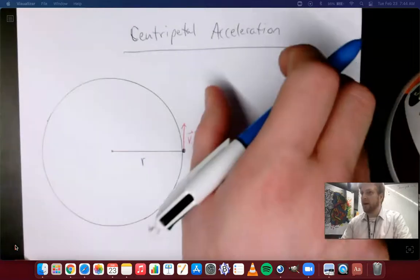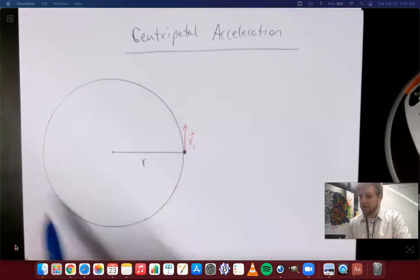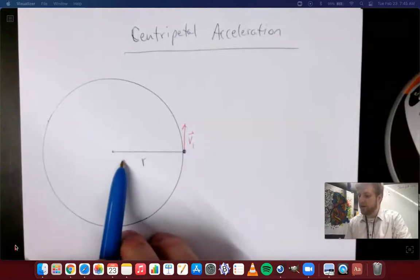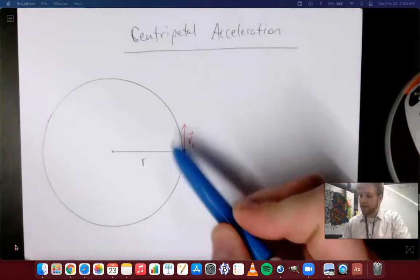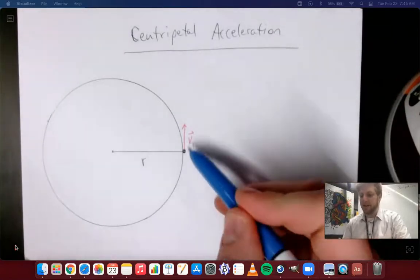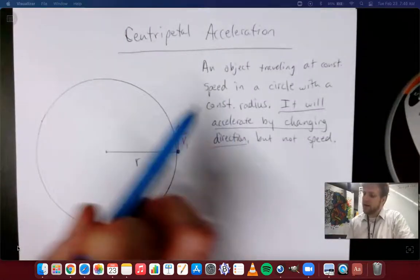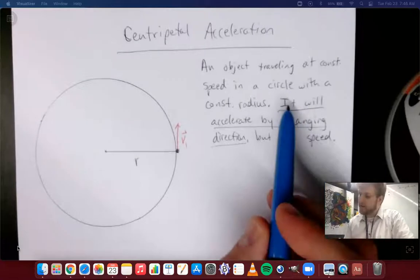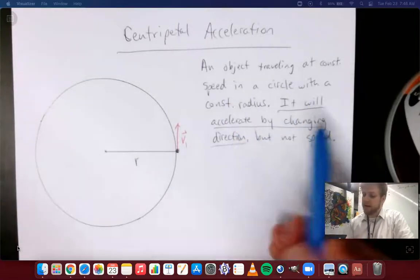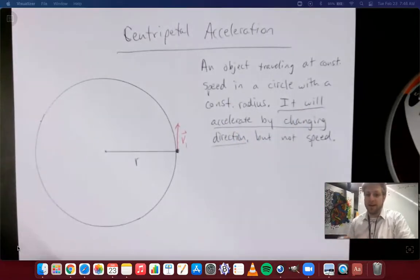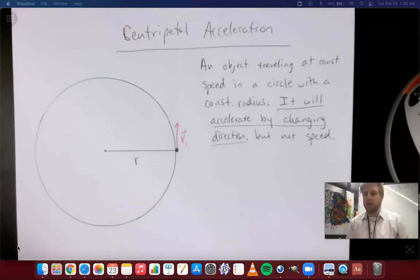So I'm going to jot down a description of this circle. What you can see here is we have a circle with constant radius r, an object starts by moving with some constant velocity, we'll call it v1. So again, a description here: an object traveling in a circle with constant speed and constant radius, it's going to accelerate by changing its direction, not its speed.